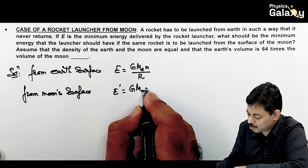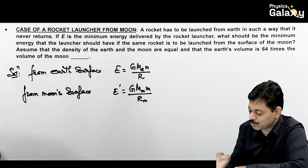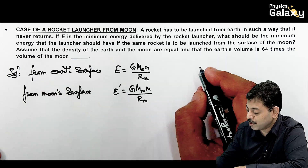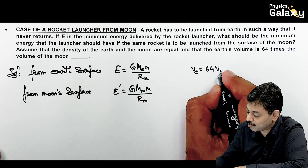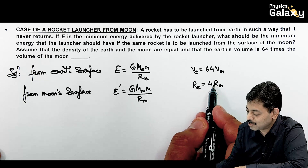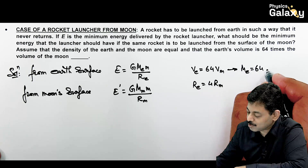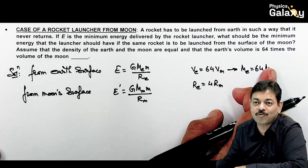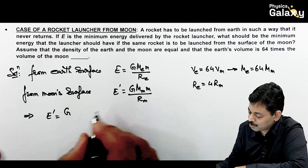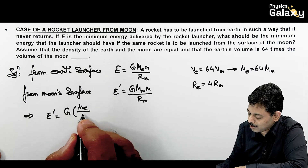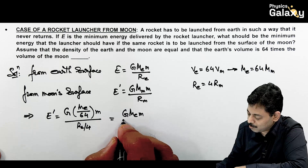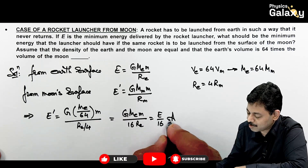For the moon, the minimum energy E' = G·Mₘ·m/Rₘ. Given that the densities of Earth and Moon are equal and the volume of Earth is 64 times that of the Moon, we get Rₑ = 4Rₘ and Mₑ = 64Mₘ. Substituting: E' = G·(Mₑ/64)·m/(Rₑ/4) = GMₑm/(16Rₑ) = E/16. So the minimum energy required from the Moon is E/16.